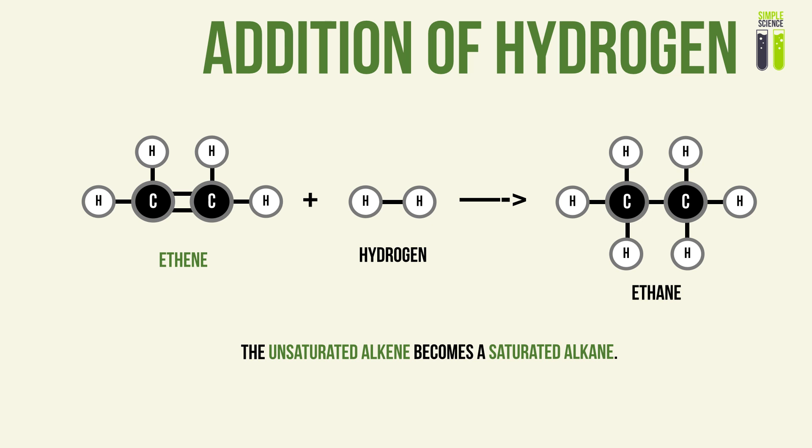Alkenes are unsaturated — they are ready to react. When they have reacted with hydrogen, they form an alkane. An alkane is very unreactive and not prone to reactions — it becomes saturated. This process can also be known as saturation, whereby an unsaturated alkene reacts with hydrogen to form a saturated alkane.